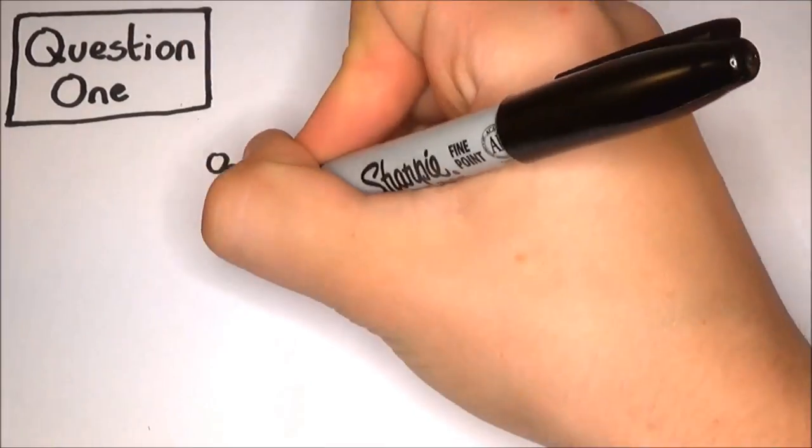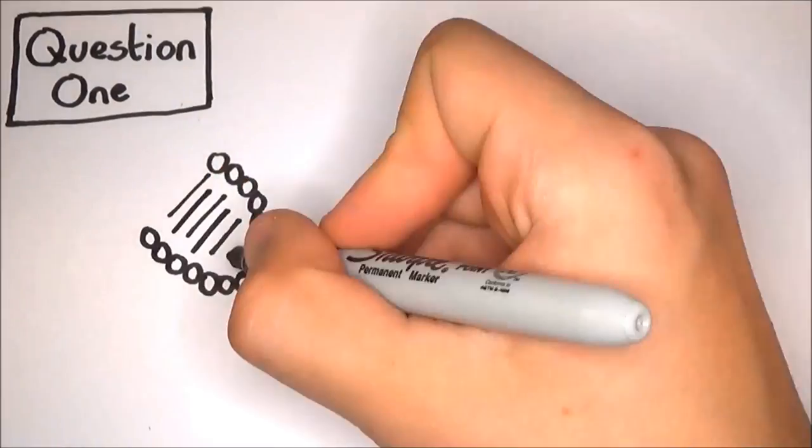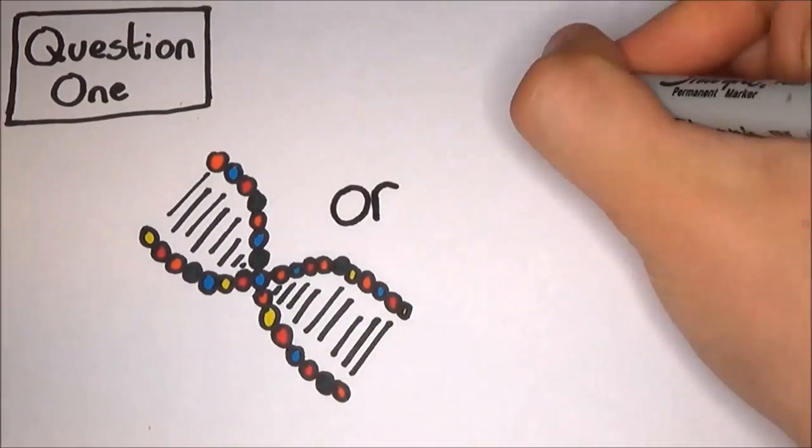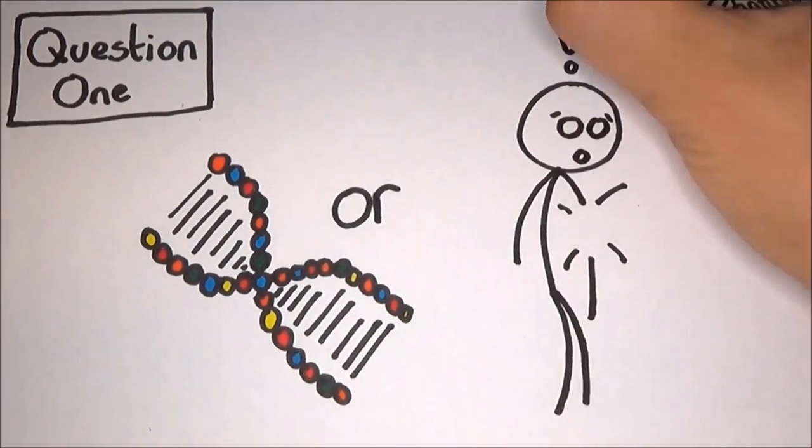Perhaps the first question that needs answering before we can fully understand the ageing process is whether it's something coded into our genes, or simply a case of our bodies wearing out.